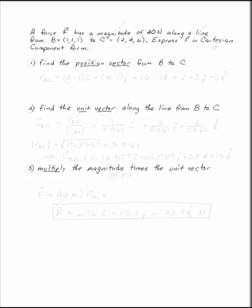A force F has a magnitude of 40 Newtons along a line from B equals 1, 1, 1 to C equals 2, 4, 6. Express F in Cartesian component form.